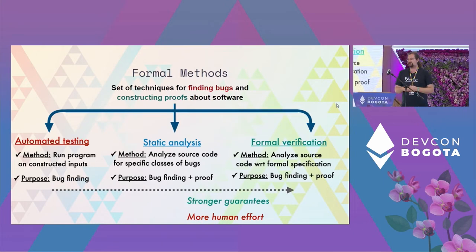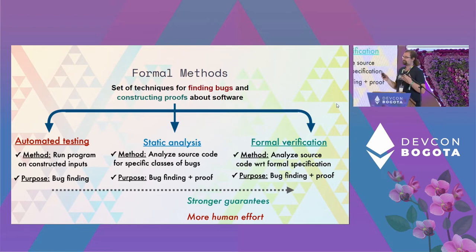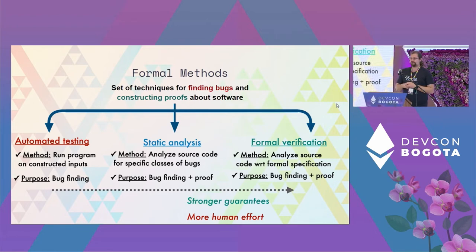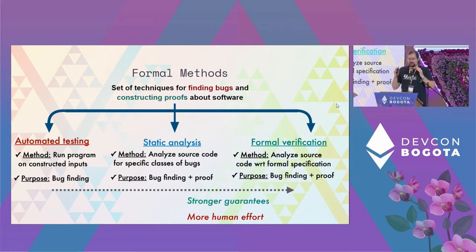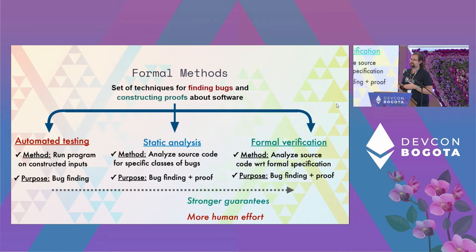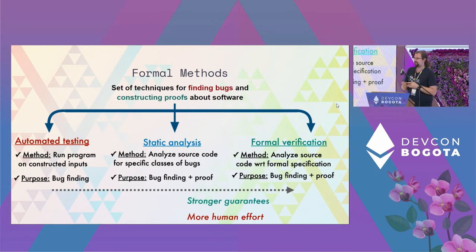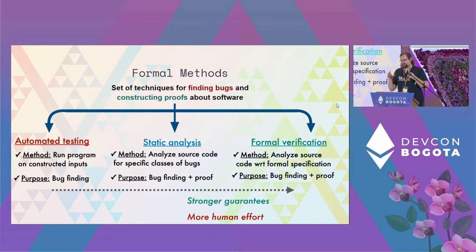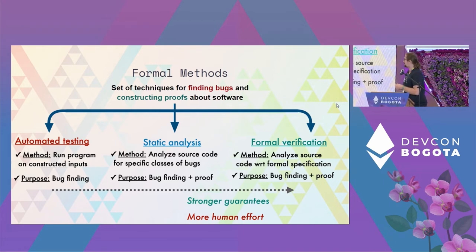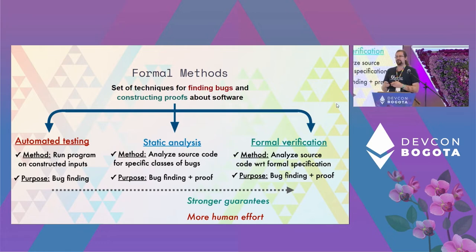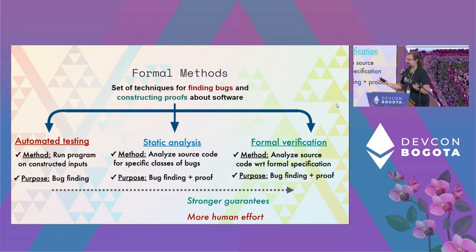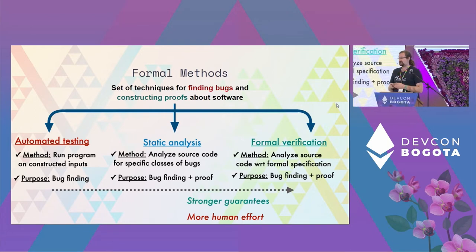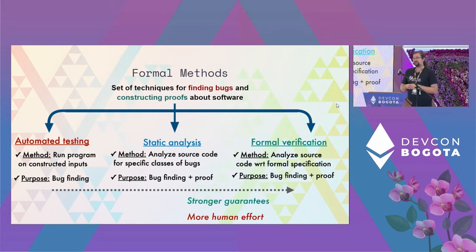The way that we deal with this at Veradice is by using a field in computer science called formal methods. Formal methods provide a way of automatically reasoning about software by understanding the semantics of the underlying program and iterating over it to determine information about it. Basically, we're going to use formal methods in order to find bugs and create proofs that the software is correct. Within formal methods there are basically three different fields: automated testing, static analysis, and formal verification.